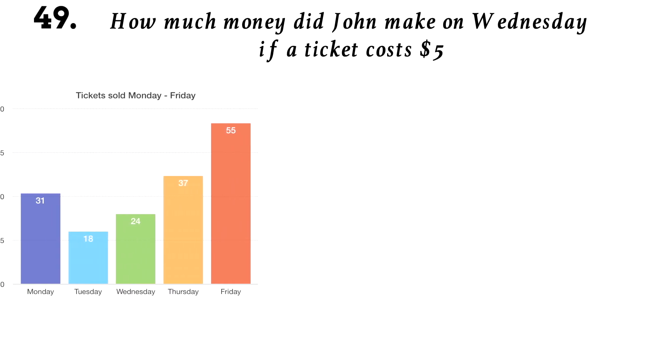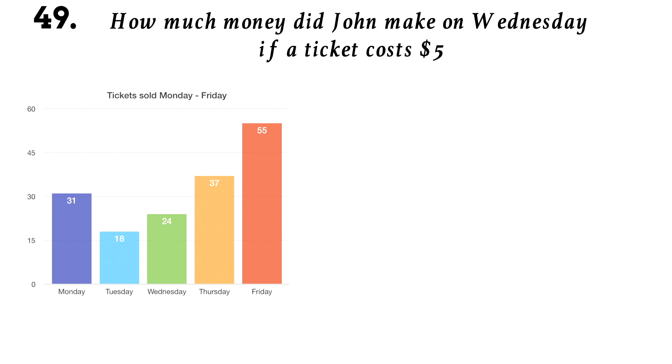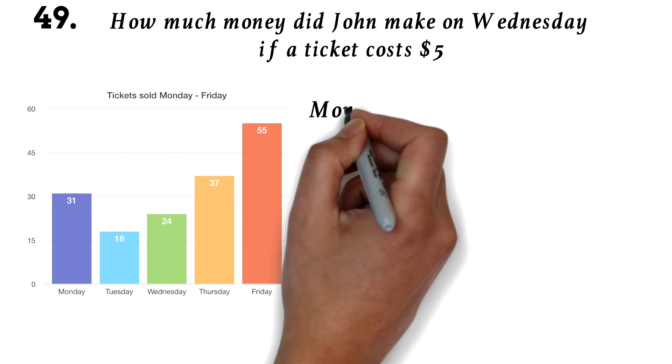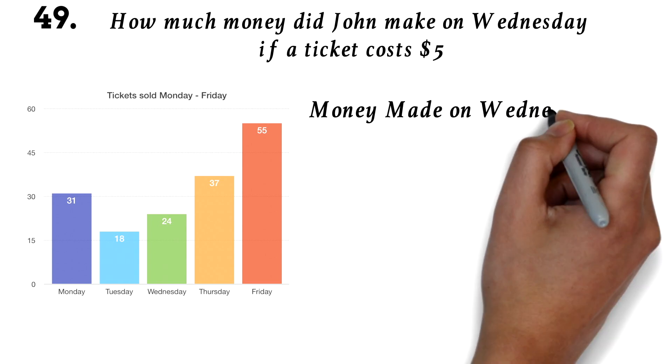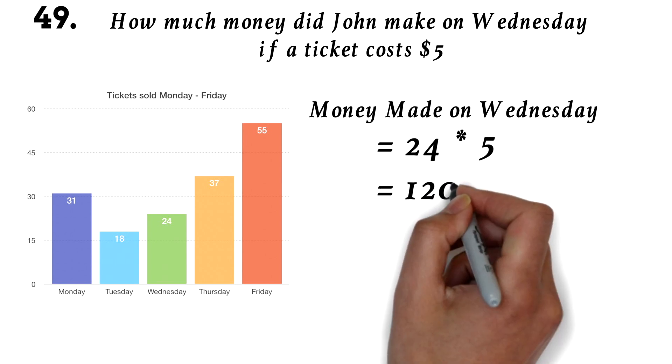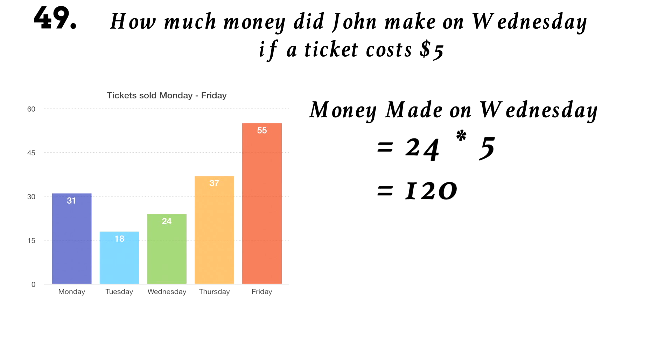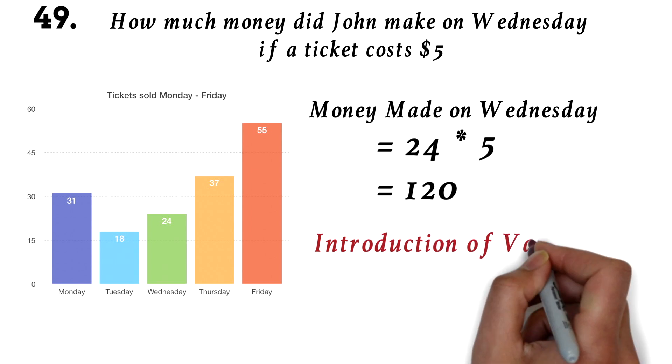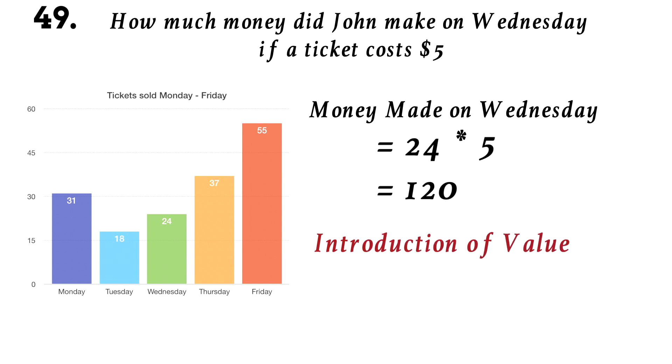Question 49. How much money did John make on Wednesday if a ticket cost $5? We are using the same chart. John sold 24 tickets on Wednesday, so we will just multiply it by the price per ticket, which is $5. 24 times 5 is 120. So John made $120. The third common kind of chart questions are the introduction of a value, like price, and being asked to further compute other things. More videos coming.